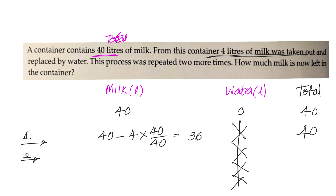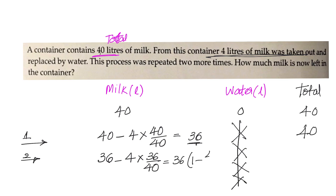For the second operation, we are removing 4 liters of liquid and adding 4 liters of water. The left-out milk is 36 liters. We are removing milk and water in their respective ratios — the ratio of milk is 36 by 40. So we remove 4 into 36 by 40 of milk, meaning the milk left is 36 into 1 minus 4 by 40, which equals 32.4 liters. Remember, this is nothing but 40 into 1 minus 4 by 40 squared.